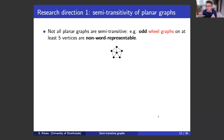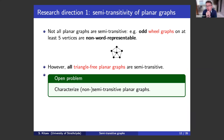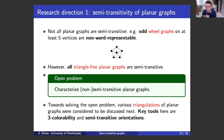Not all planar graphs are semi-transitive — you can see this because a particular graph shown here is not semi-transitive. All triangle-free planar graphs are semi-transitive, which is good news. The open problem is to characterize non-semi-transitivity of planar graphs. This problem is possibly too complicated. Towards solving it, we have been considering various subclasses of planar graphs and establishing semi-transitivity, actually classifying semi-transitive graphs from particular families of planar graphs.